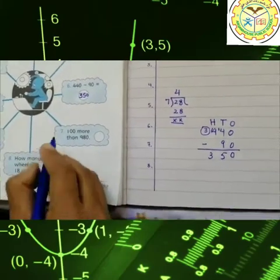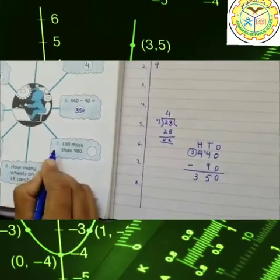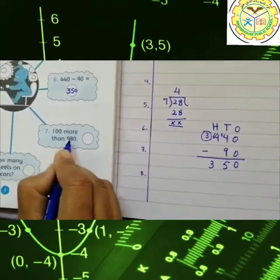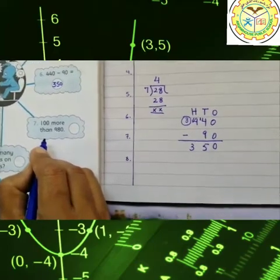Okay students, quickly come from here. Question number 7: 100 more than 980. 100 more, more means 980 mein majeed aapne 100 ko add kar dena hai. So, 980.